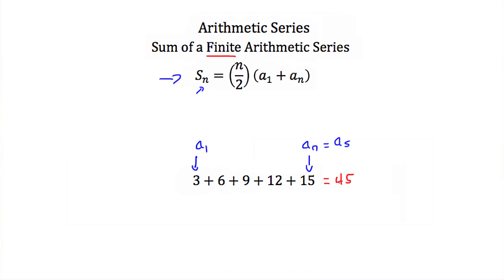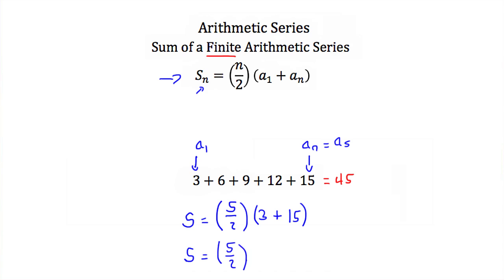Let's try using this formula to do this summation for our example series. Our sum is equal to n over 2, but n is 5 because there are 5 terms in this series. So 5 over 2 times a1, which is our first term 3, added to an, or a5, which is the last term 15. So our sum is equal to 5 halves times 3 plus 15, or 18. Now 18 divided by 2 would be 9, and 9 times 5 is 45. Our sum is 45, which is exactly what we got when we added these up the long way. So whenever you have a finite arithmetic series, you can use this formula to find its sum. If this is an infinite arithmetic series, you can't use this formula, because there's no final sum to an infinite arithmetic series.